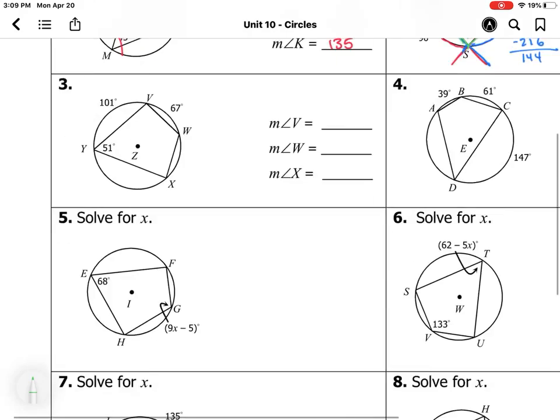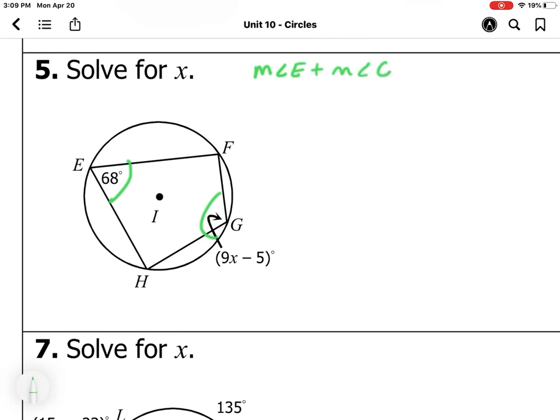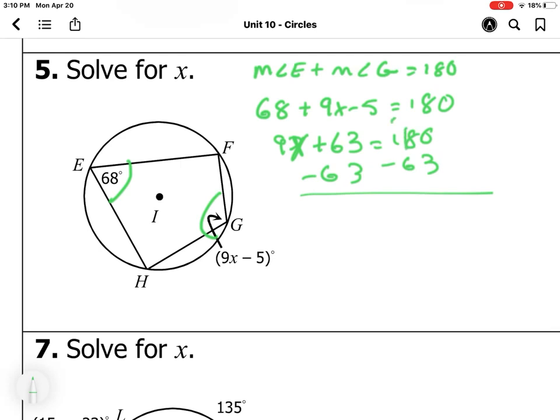Now let's take a look at solving for x. We know that the measure of angle E plus the measure of angle G is going to equal 180. We know that E is 68. 68 plus 9x minus 5 equals 180. So we have 9x plus 63 equals 180. We subtract 63 from both sides, and then we divide by 9, and we get x equals 13. Using what we know, solving for what we don't.